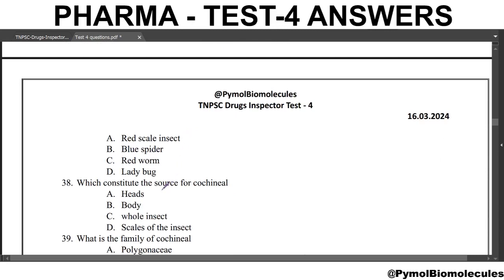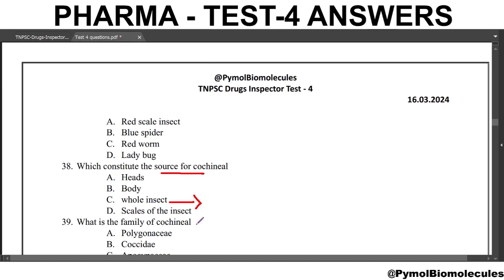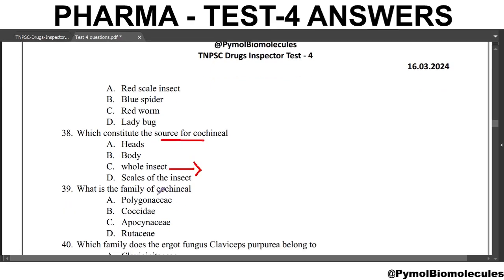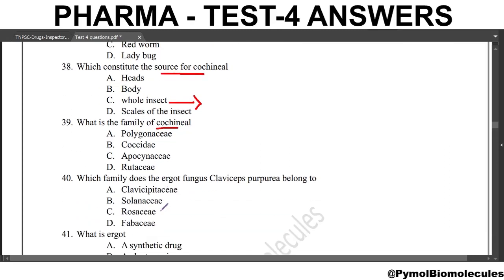Next question: which part constitutes the source for cochineal? It is the whole insect — specifically the female insect — that is used. Next question: what is the family of cochineal? The answer is Coccidae. Next question: which family does the ergot fungus Claviceps purpurea belong to? The answer is Clavicipitaceae.